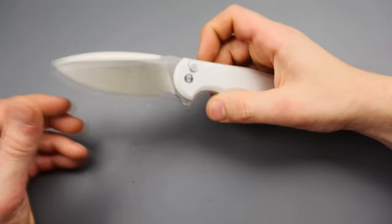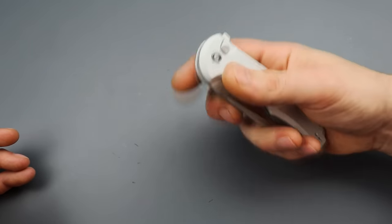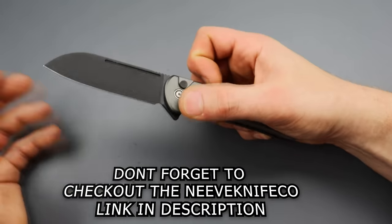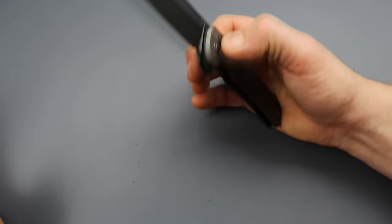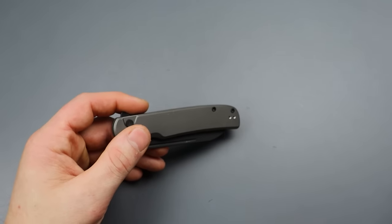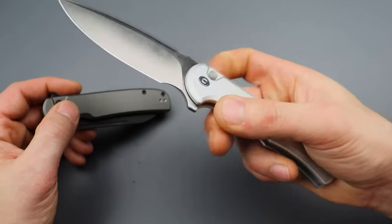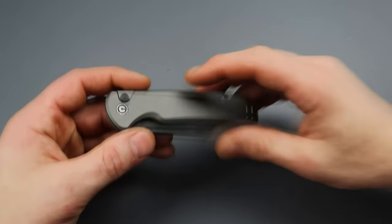One is the Civivi Praxis Button Lock, and the reason why is it's a great knife, solid knife, love the knife, but the Praxis already existed. Same thing with the Chevalier. The Chevalier, what was the difference? They just added aluminum. So this was already a button lock. While the Praxis was not a button lock, it was a liner lock, they added aluminum and then a button lock action. But it's close enough to the original that I can't really put it in the running.